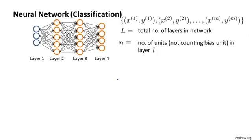I'm going to focus on the application of neural networks to classification problems. So suppose we have a network like that shown on the left and suppose we have a training set of x_i, y_i pairs of m training examples. I'm going to use uppercase L to denote the total number of layers in this network. So for the network shown on the left, we would have capital L equals 4.